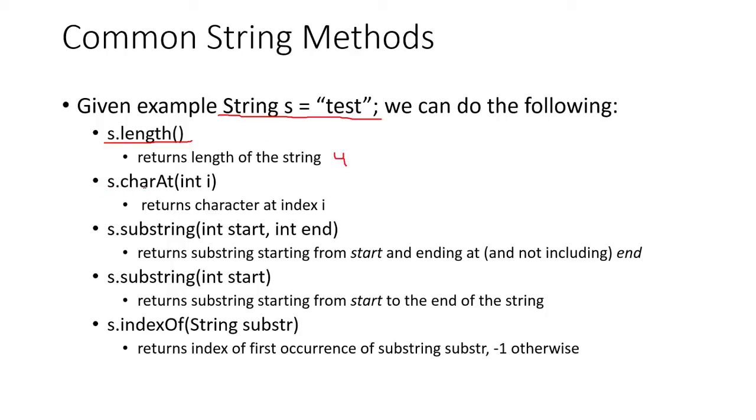We can do s.charAt, and then it takes an integer i, so it returns the character at index i. So if we did s.charAt and we passed in an integer, say 0, the value represented by that is going to be the character at index 0. Remember, these start up from 0, and they go up to the length minus 1. So the character at 0 is going to end up being T.